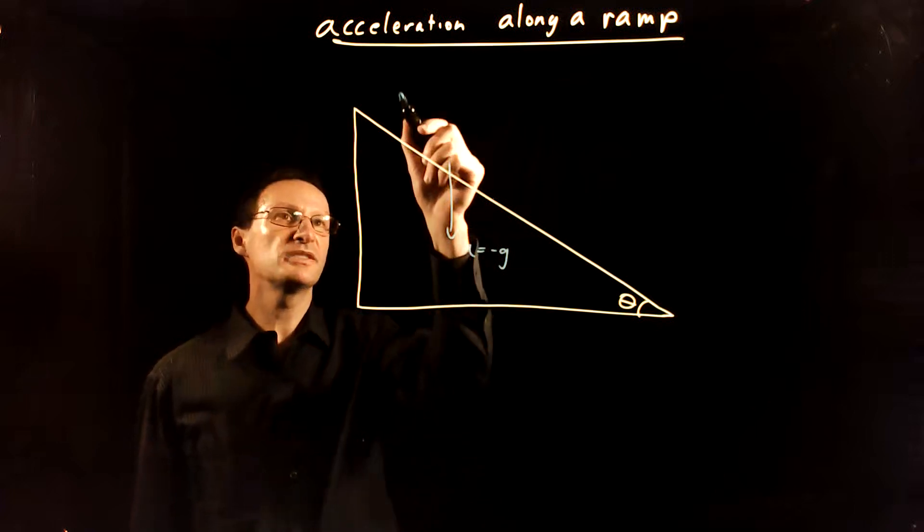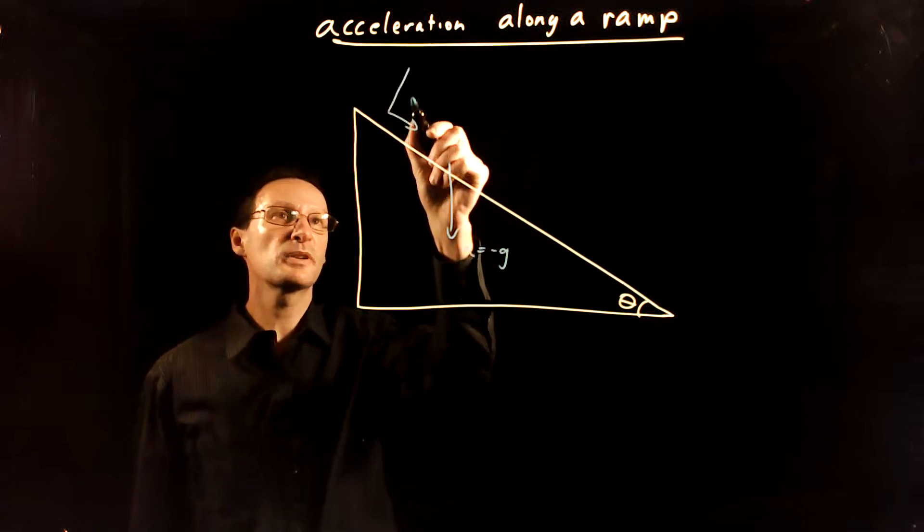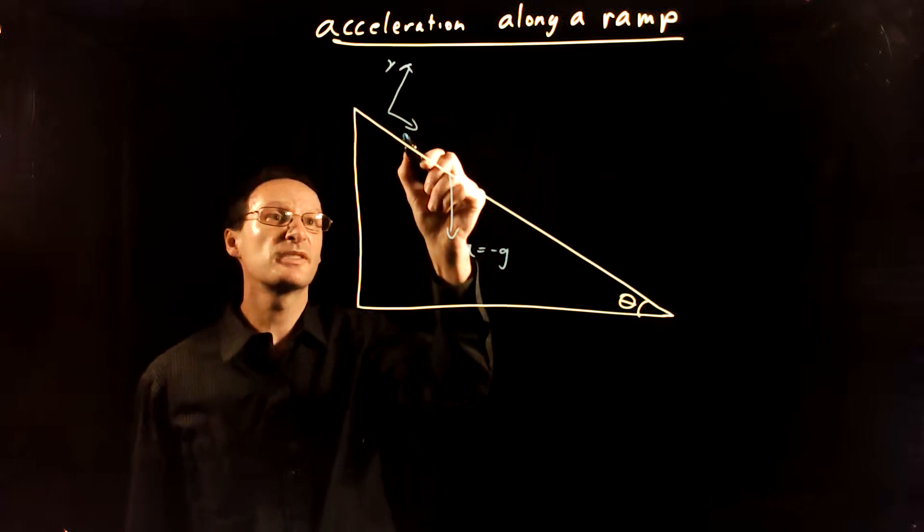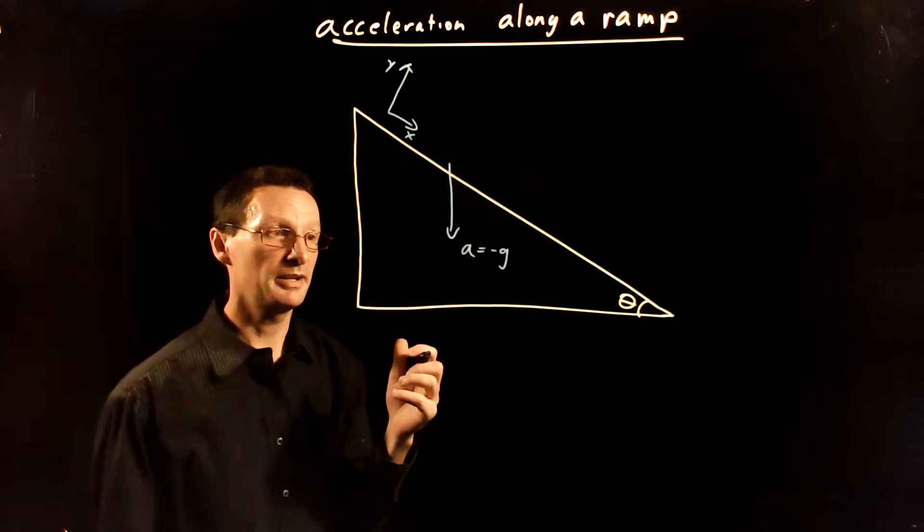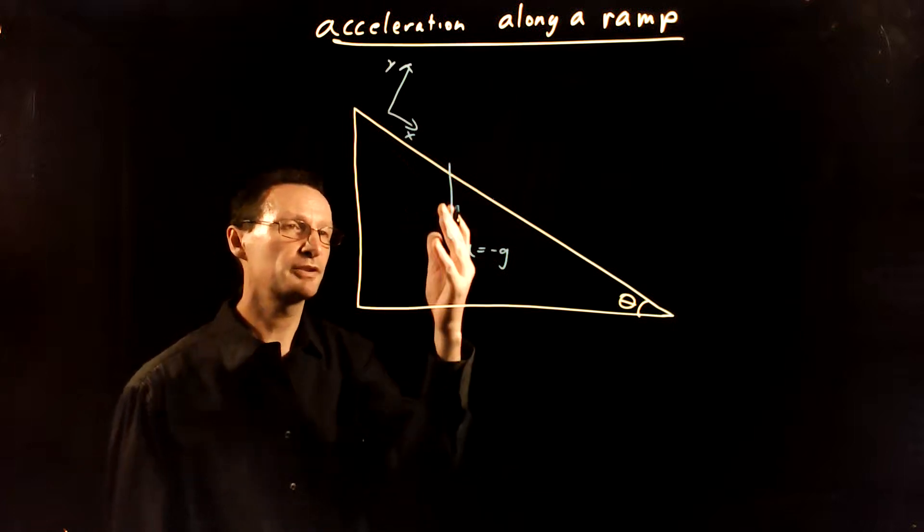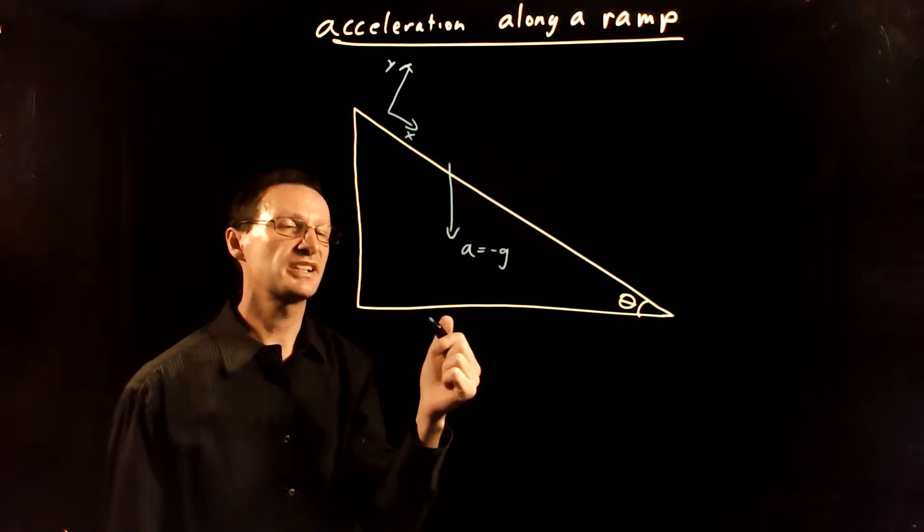So to do that, we set up a coordinate system that is slanted. This is like cheating—what I talked about before—it's not cheating, it's just being clever and fitting your coordinate system to the situation at hand.